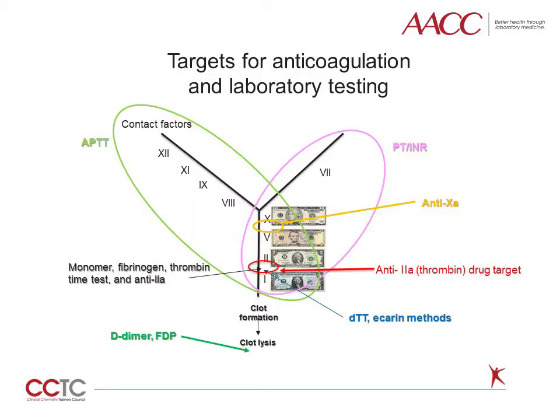This cartoon of the coagulation cascade demonstrates the various targets for anticoagulant agents and depicts the laboratory testing pathways and assay targets. The currency or dollar signs in the common pathway is a simple trick to remember those factors in this pathway and their order of reactions: 10, 5, 2, and 1. Factor 1 is also known as fibrinogen. Both direct Xa inhibitors and direct thrombin inhibitors can potentially cause prolongation of the PTT, PT, and RVVT, as these drugs inhibit factors within these pathways.